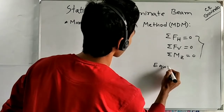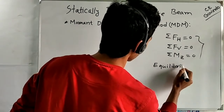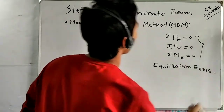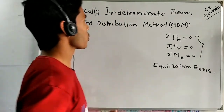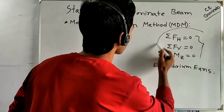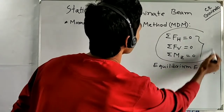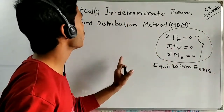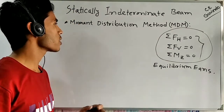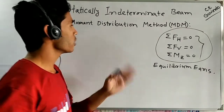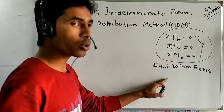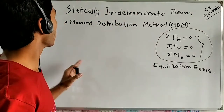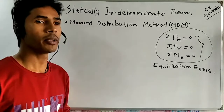These three equations are called equilibrium equations or static equilibrium equations. Using these three equations we can find only three unknowns. When our unknowns become more than three, then we cannot solve the structure using these three static equations, and those structures are called statically indeterminate beams.